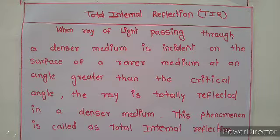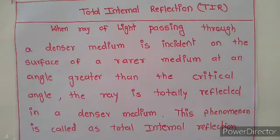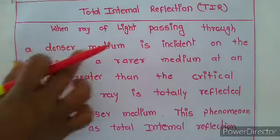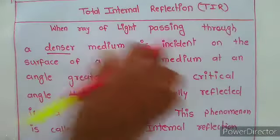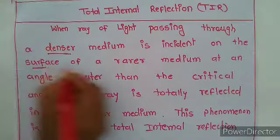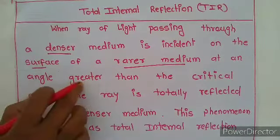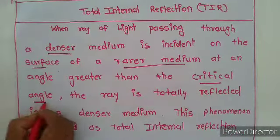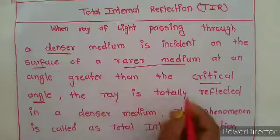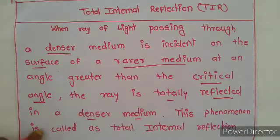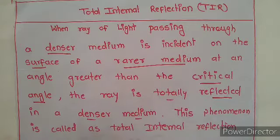So, what is meant by total internal reflection? The total internal reflection occurs when a ray of light passing through the denser medium is incident on the surface of a rarer medium at an angle greater than the critical angle. The ray is then totally reflected back into the denser medium. This phenomenon is called total internal reflection.